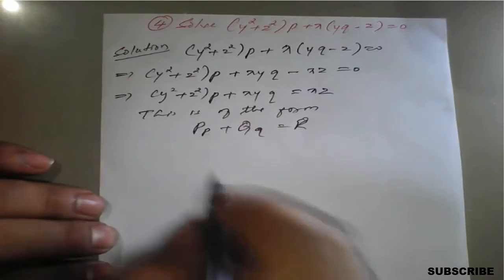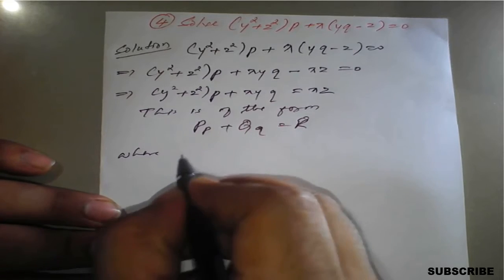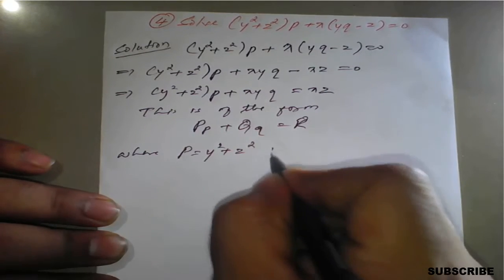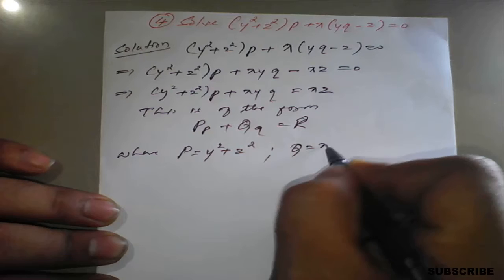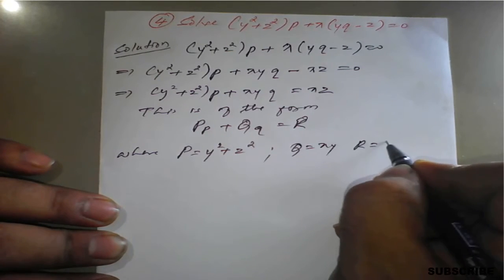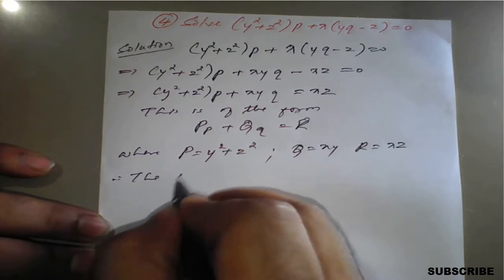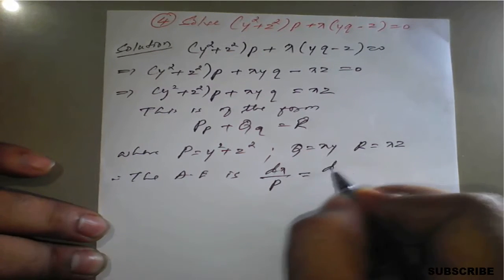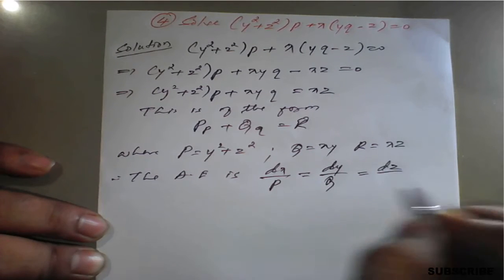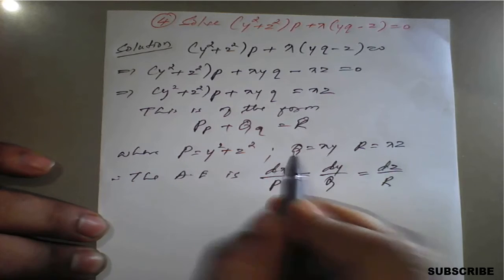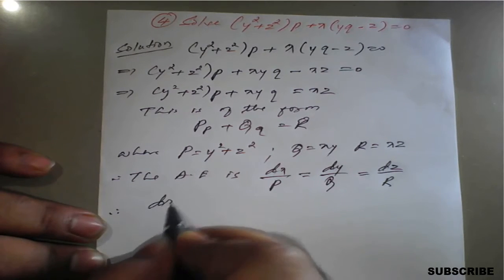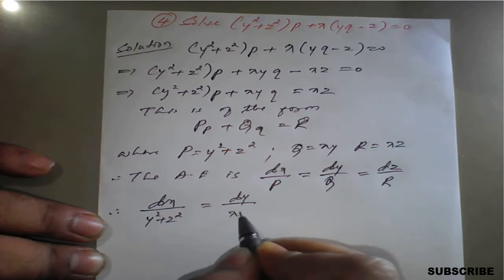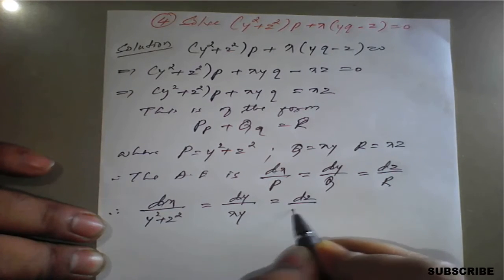Here R is equal to XZ. Capital P is the coefficient of small p, that is Y² + Z². Capital Q is XY, and capital R is XZ. Therefore, the auxiliary equation is dx/P = dy/Q = dz/R, which gives us dx/(Y² + Z²) = dy/(XY) = dz/(XZ).